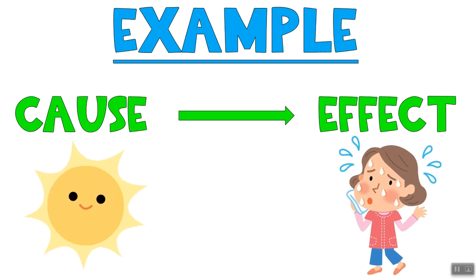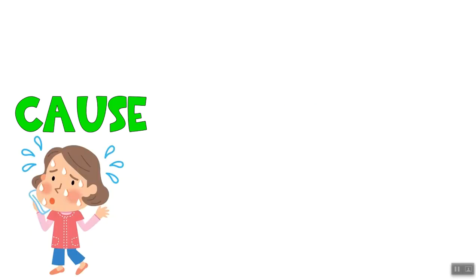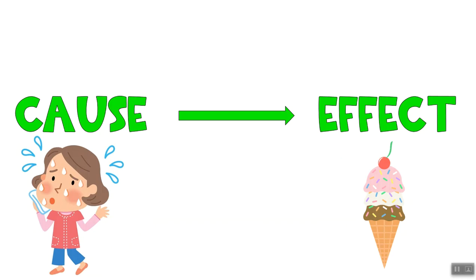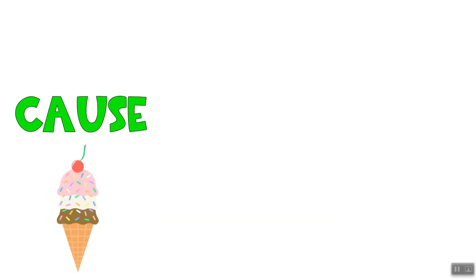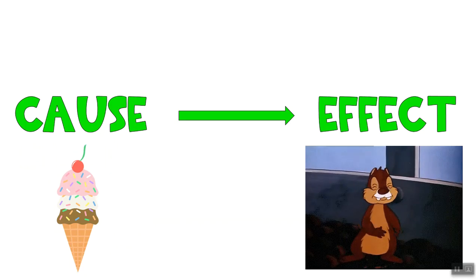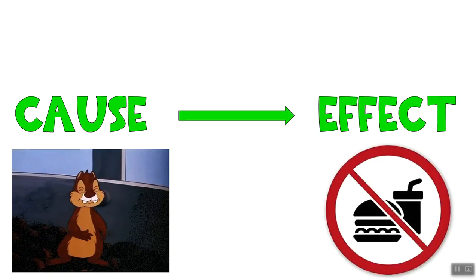So our example today I'm gonna go through kind of like a chain of events. Because it was so sunny out the effect was I was sweating. Because I was sweating the effect is I wanted some ice cream. Because I ate ice cream I became really full.